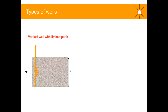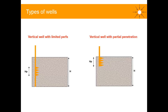Sometimes limited perforation and partial penetration are considered more or less the same. Strictly speaking, partial penetration refers to a vertical well that hasn't been drilled across the full reservoir section, where only a small open section HP is producing, giving a penetration ratio HP over h. This can also occur in a multi-layer reservoir where the bottom section wasn't fully drilled. In general, limited perforation and partial penetration are treated as equivalent.